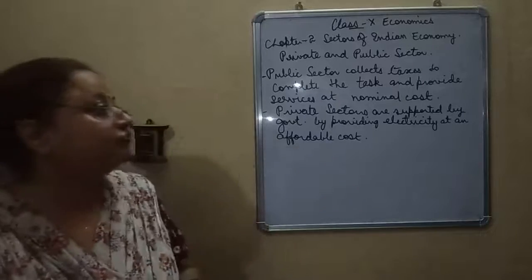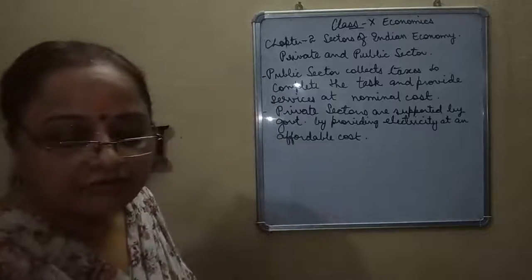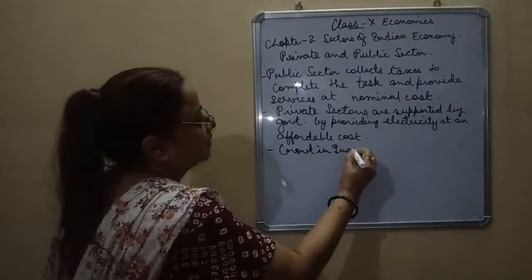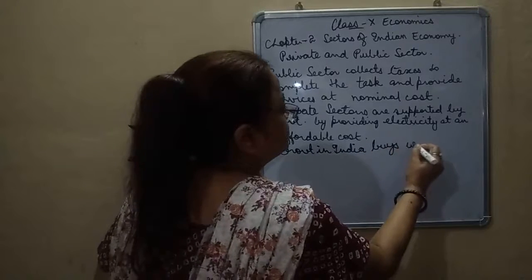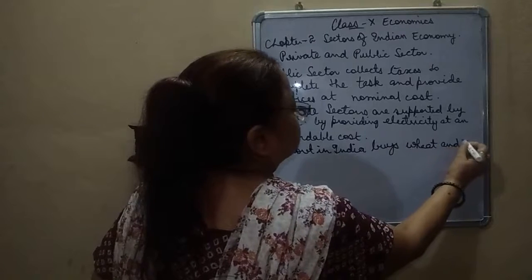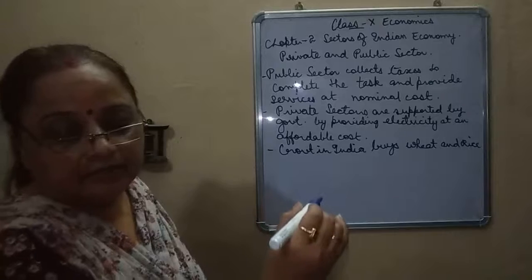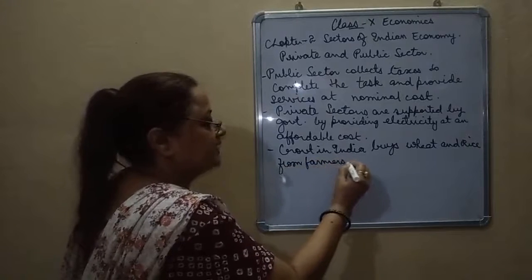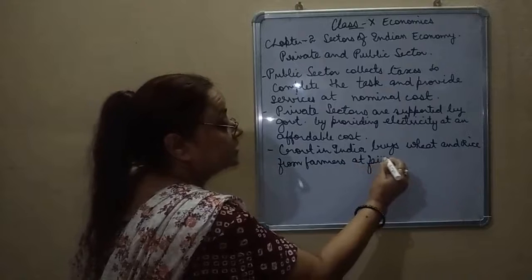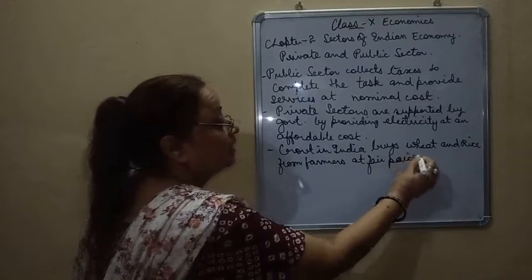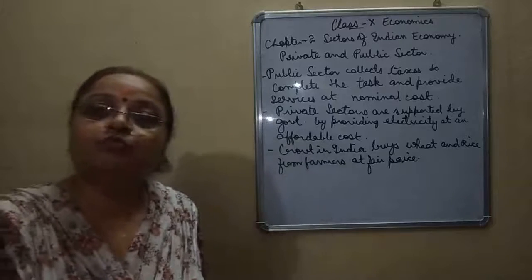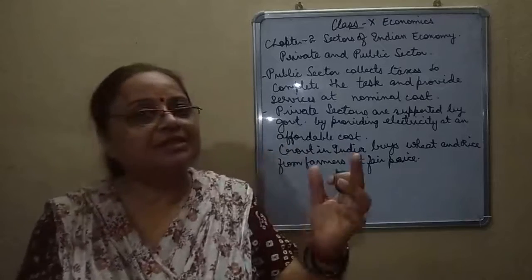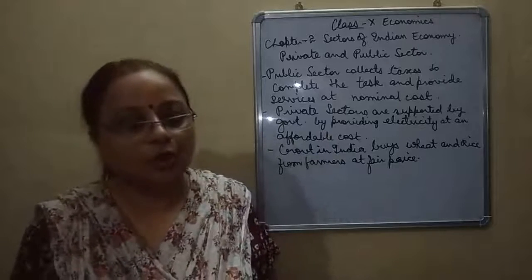Government also supports farmers and small producers. In India, the government buys wheat and rice directly from farmers at a fair price. Farmers get good money for this. The produce is stored in godowns and then sold at lower prices through the food security system.